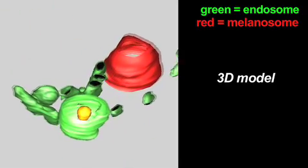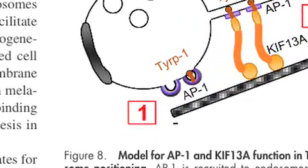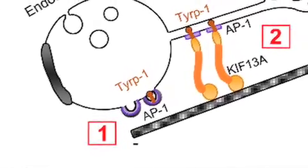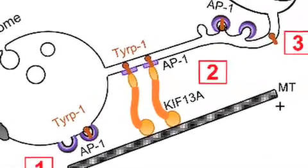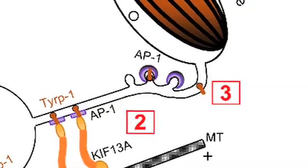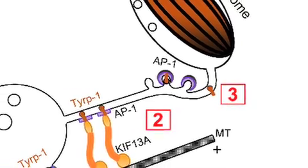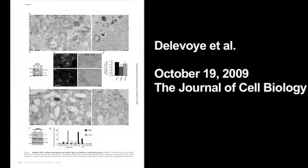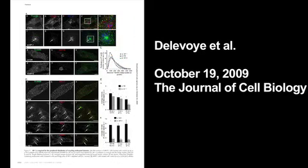The group proposes that AP1 and KIF13A coordinate endosomal sorting and positioning, sequestering cargo like tyrosinase-related protein 1 into specific endosomal domains, which are then positioned close to their melanosomal destination in the cell periphery by transport along microtubules. The cargo is finally delivered by tubules which form from the endosome to contact the melanosomes. It remains to be seen whether AP1 and KIF13A are involved in this step too. You can read more about the whole process in the paper by Delavoie in the October 19th issue of the Journal of Cell Biology.